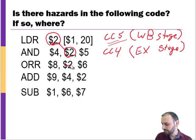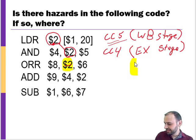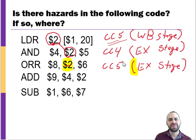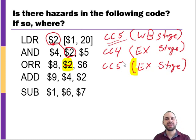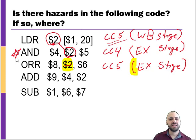Unlike the AND instruction, the OR instruction has no problem with register 2. We can forward properly — it's also needed at the execute stage, but because it's one clock cycle later, we can forward like normal. We can write to the register in the first half of the clock cycle and read at the second half. The big problem is with instruction 2, where we're reading a register the clock cycle after it's being written from a load.